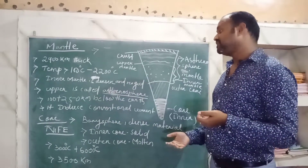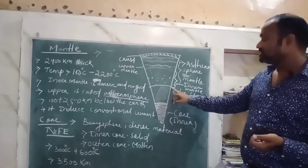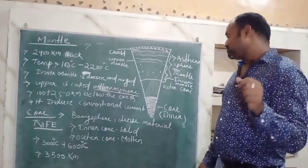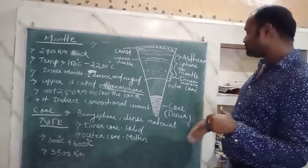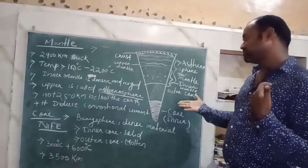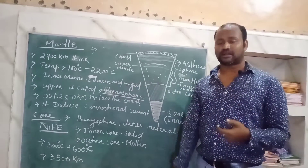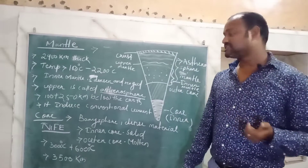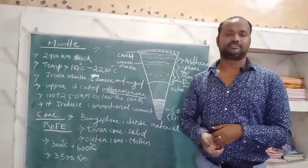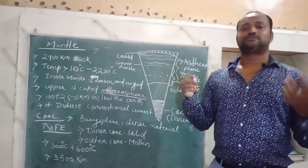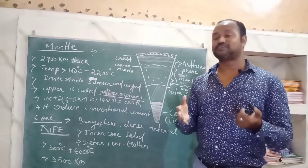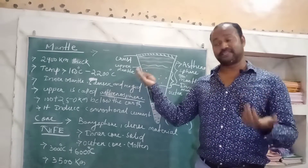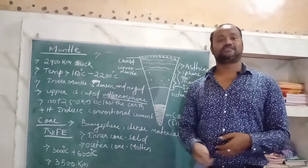Now let's discuss the core. The core is the innermost layer of the interior of the earth and is also known as the barysphere. It is made up of denser material and has two parts: the outer core and the inner core. The outer core is made up of denser material, while the inner core contains molten magma. The temperature of the core is about 3000 to 6000 degrees Celsius and its depth is about 3500 kilometers.